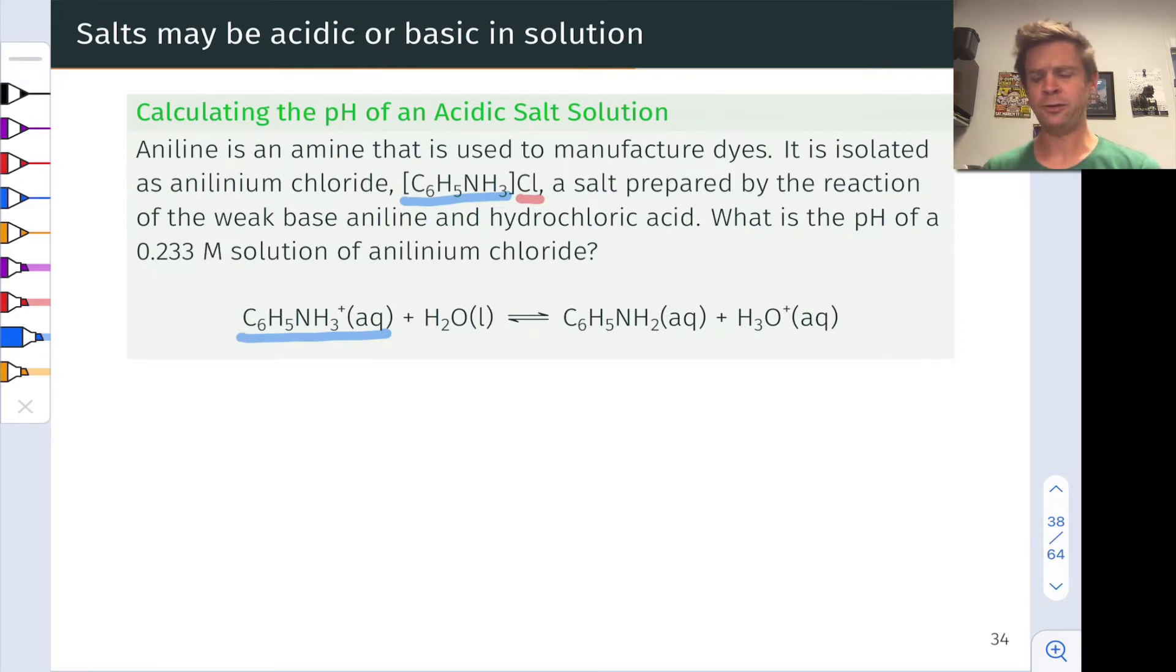Now before we get into any of this, writing this chemical equation and thinking about what's going to happen, we can immediately make a conclusion about where the pH should lie in terms of a range. It should absolutely be less than 7. Let's go ahead and write that because we're going to return to that sanity check at the end of the problem. Because this cation is reacting with water to produce hydronium ion, the final pH should be less than 7.